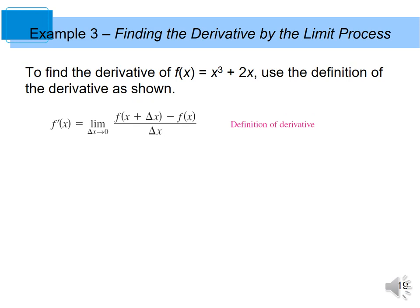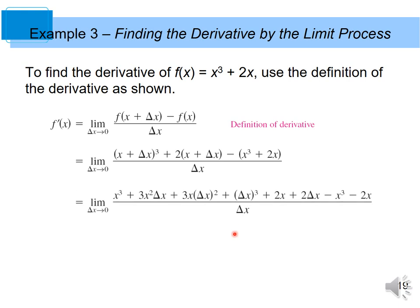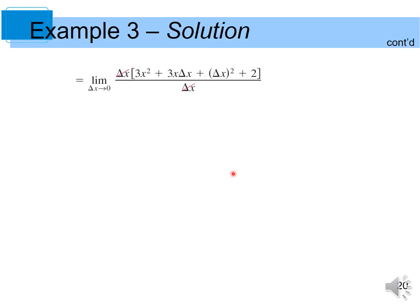Look at this example. To find the derivative of f(x) equal to x cubed plus 2x, use the definition of the derivative. Substitute (x plus delta x) into the given function, expand, and simplify. After simplifying, perform direct substitution to obtain the final derivative.